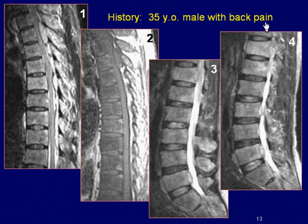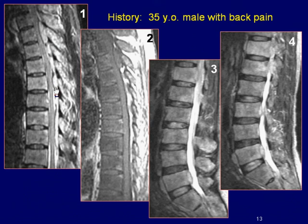A 35-year-old male with back pain. Sagittal T2-weighted image of the thoracic spine reveals heterogeneous high-signal lesions in multiple vertebral bodies, as well as a mass in the posterior epidural space.